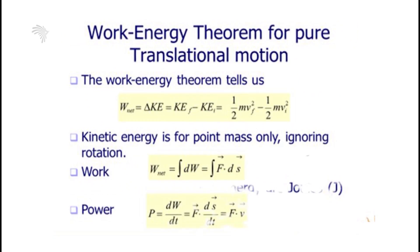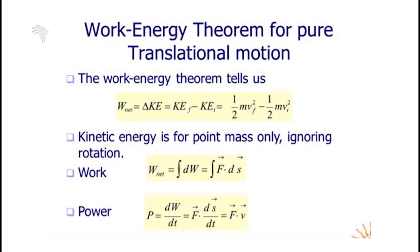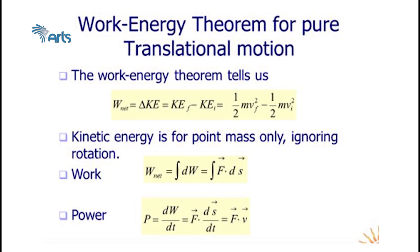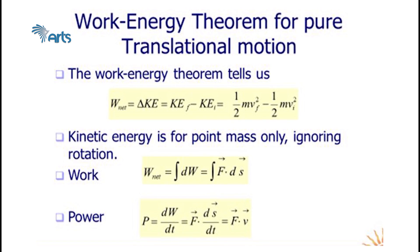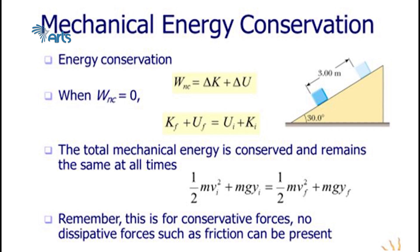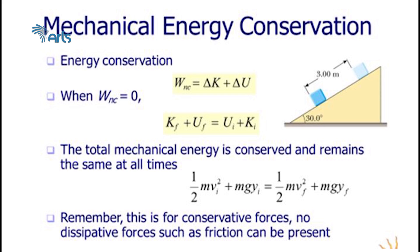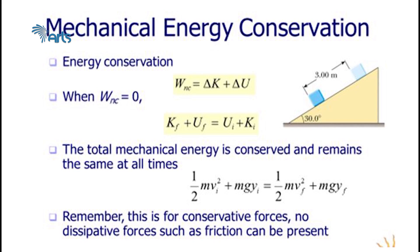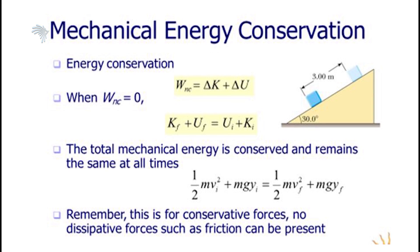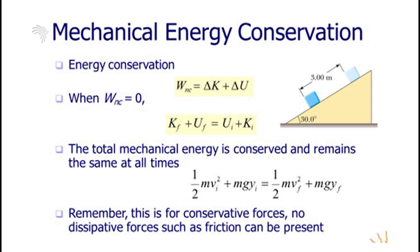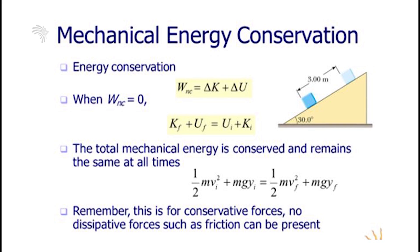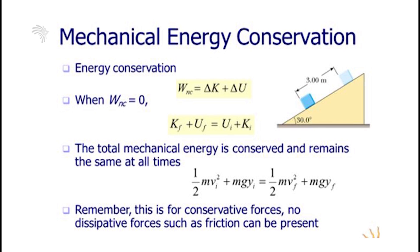For the work-energy theorem in pure translational motion, net work done equals the change in kinetic energy — final minus initial kinetic energy. Work done can also be calculated using the integral of F·ds. Power is the time rate of doing work, or the first derivative of work done with respect to time. For mechanical energy conservation, in the absence of dissipative forces, total mechanical energy is conserved. For a block on an inclined plane with no friction, the sum of kinetic and potential energy at position one equals the sum at position two.